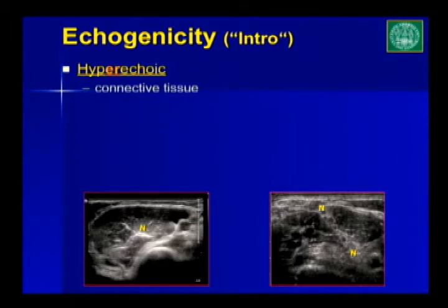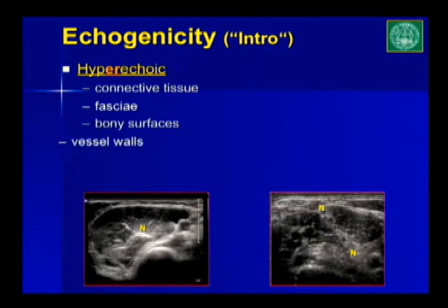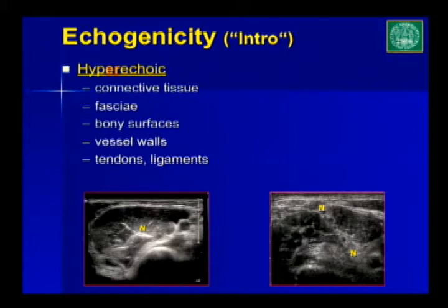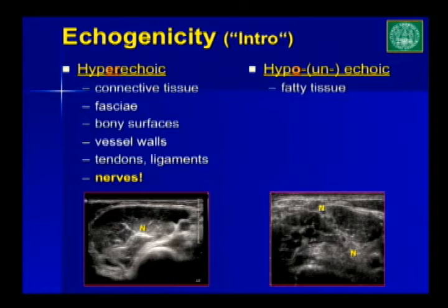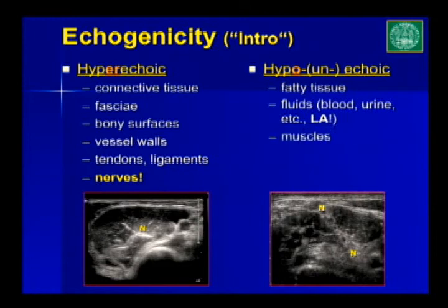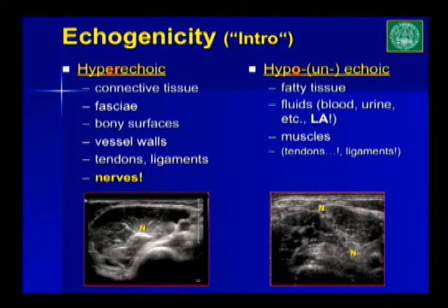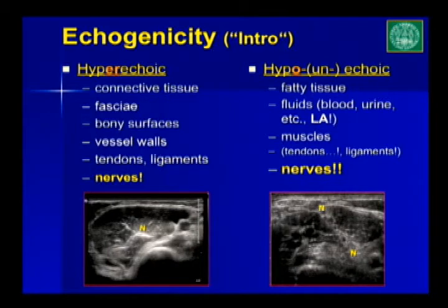We are talking about hyperechoic and hypoechoic structures. Hyperechoic structures include connective tissue, fasciae, bony surfaces — very beautifully seen here — vessel walls seen in the axillary artery, tendons and ligaments, and nerves. Hypoechoic structures include fatty tissue, which is very important. Not all fatty tissue is hypoechoic — for example, in MSK ultrasound there are fat pads that are hyperechoic. Fluids and local anesthetic you apply are also hypoechoic. Muscles, tendons, and ligaments are in brackets because not all of them are truly hypo or hyperechoic, depending on your scanning expertise. Two different nerves are shown — one is oval, the other is round — dark nerves between two muscles in the interscalene groove, and a very bright nerve within a muscle.